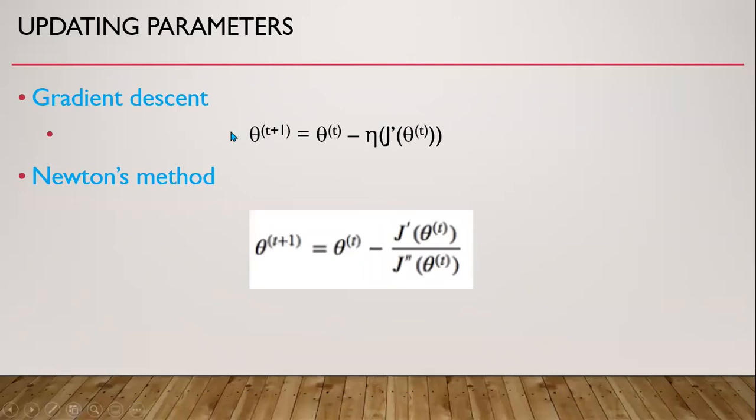In general, we can update the parameters. As I told you, it is difficult to calculate the parameters directly. We need to start with a random value of parameter, and then we update the parameter at each step using this equation or formula, where this is the learning rate and this is the first partial derivative of the loss function.